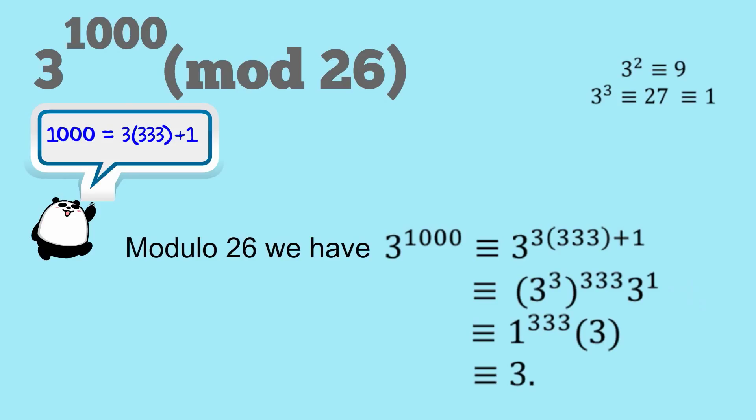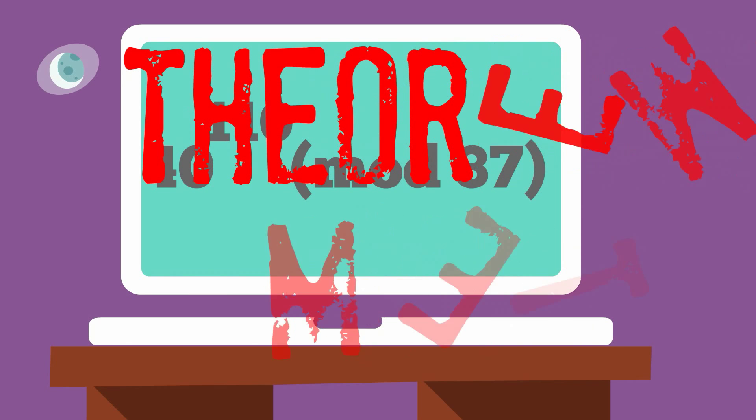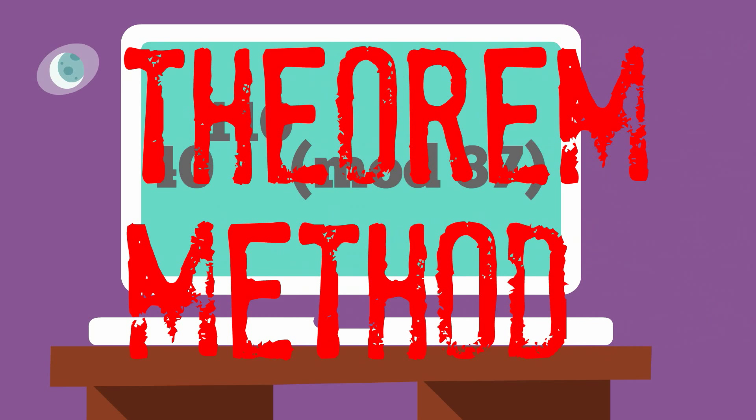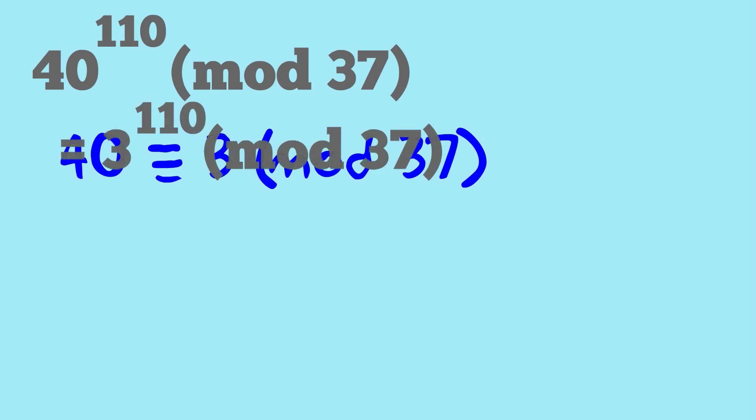Now we can go to the last problem, which is 40 to the power of 110 modulo 37. And I call this the theorem method. So the first thing that we can do, and we can do this with all these sort of problems, is that there's no point working with 40. We might as well just take the modulo of that 37 in this case. So we get down to 3 to the power of 110.